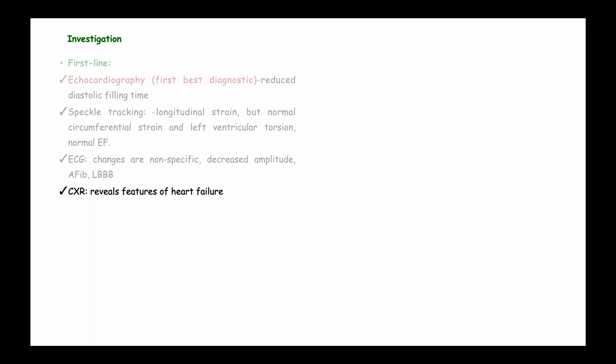Blood analysis should include liver function tests — since hepatosplenomegaly is expected — electrolytes, and cardiac enzymes such as troponin and CK-MB to rule out ischemic heart disease as a cause of cardiac disease.